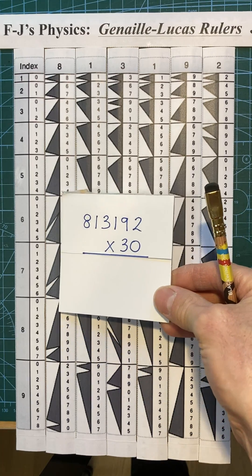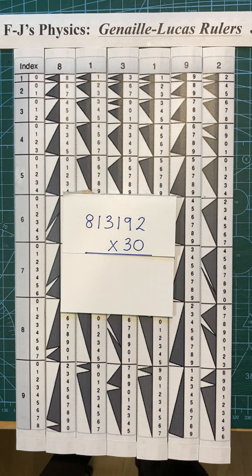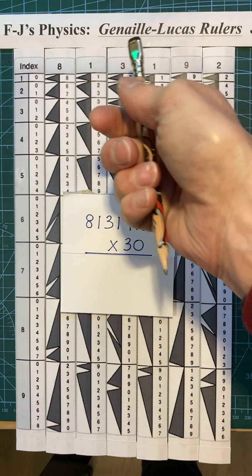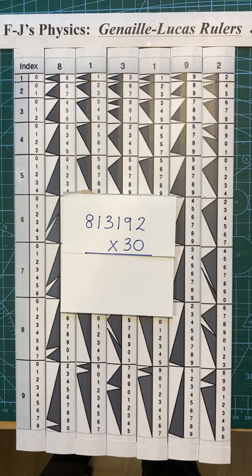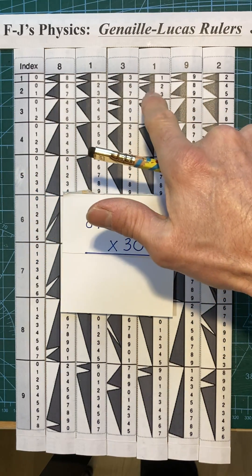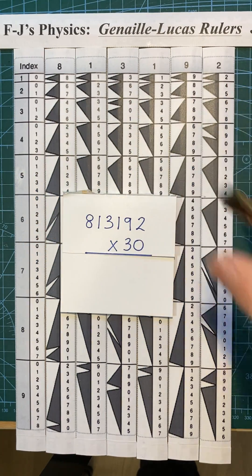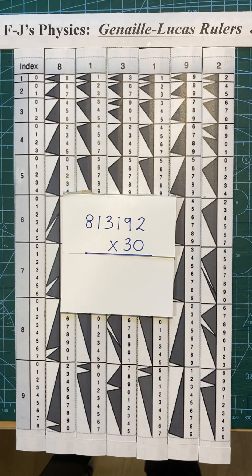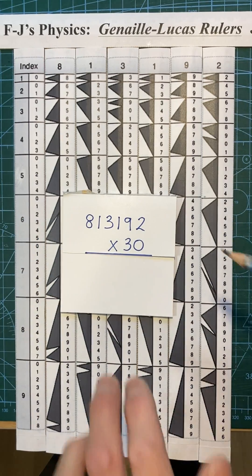So you're in a hurry and you want to multiply 813,192 by 30 and you haven't got a pocket calculator to hand. Dead easy. Use some Genaille-Lucas rulers and lie the 813,192 rulers next to each other in order, next to the index, and just read off the answer.